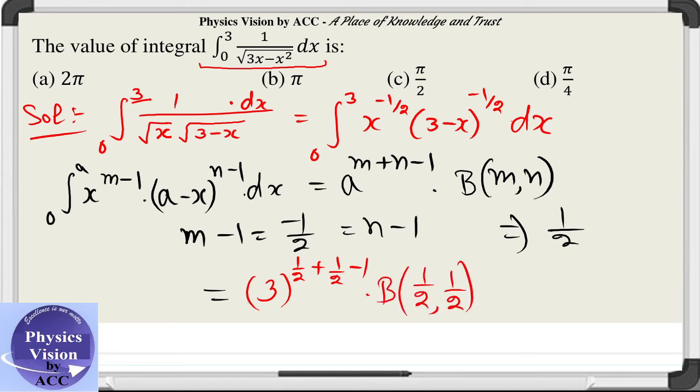So the first term is 1, 3 power 0 is 1, and beta half beta half is gamma half gamma half upon gamma half plus half that is gamma 1. This gives you under root pi into under root pi upon 1, that is pi. That is option b as your correct answer.